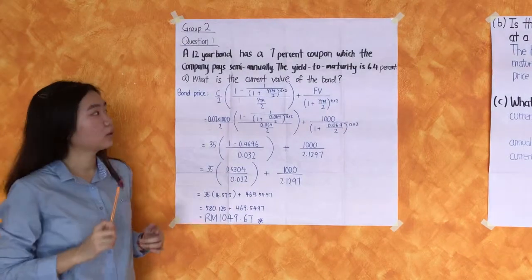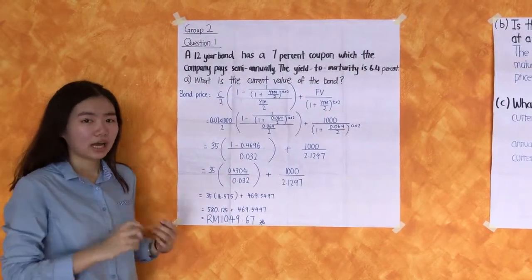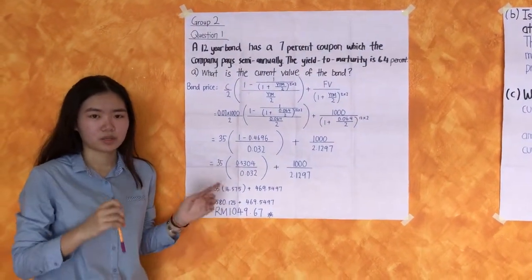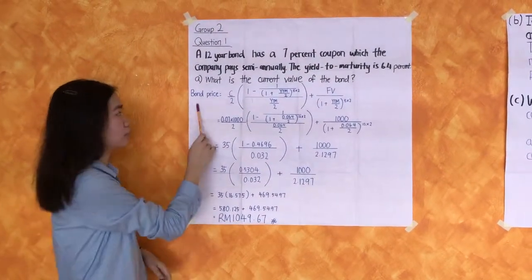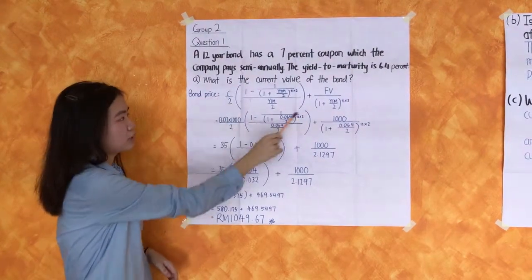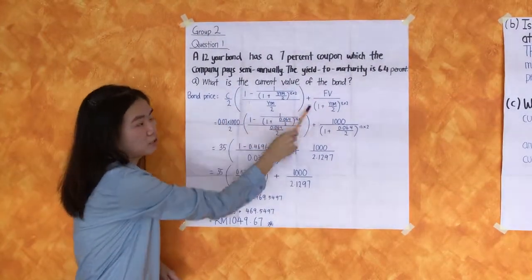What is the current value of the bond? The current value of the bond means the bond price. So we use the PVA plus PV formula to find the bond price. This is the PVA plus PV formula.